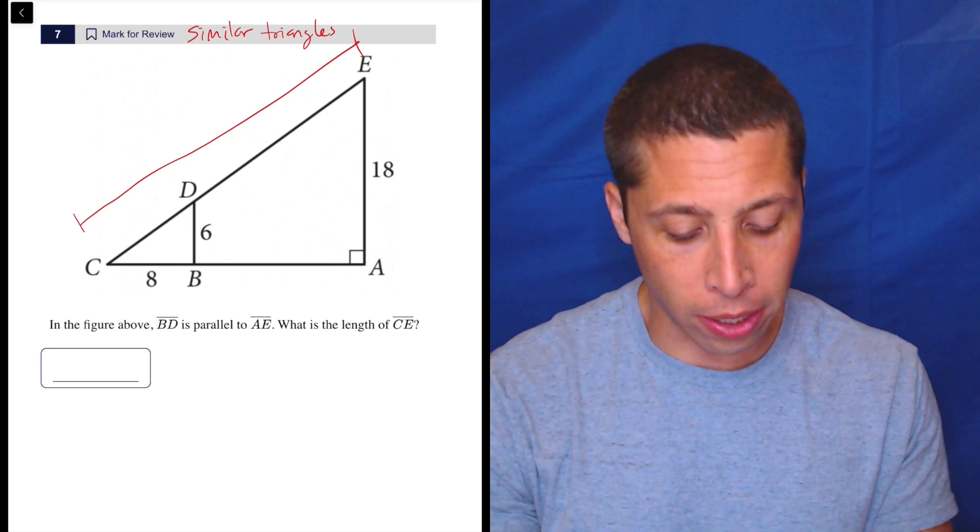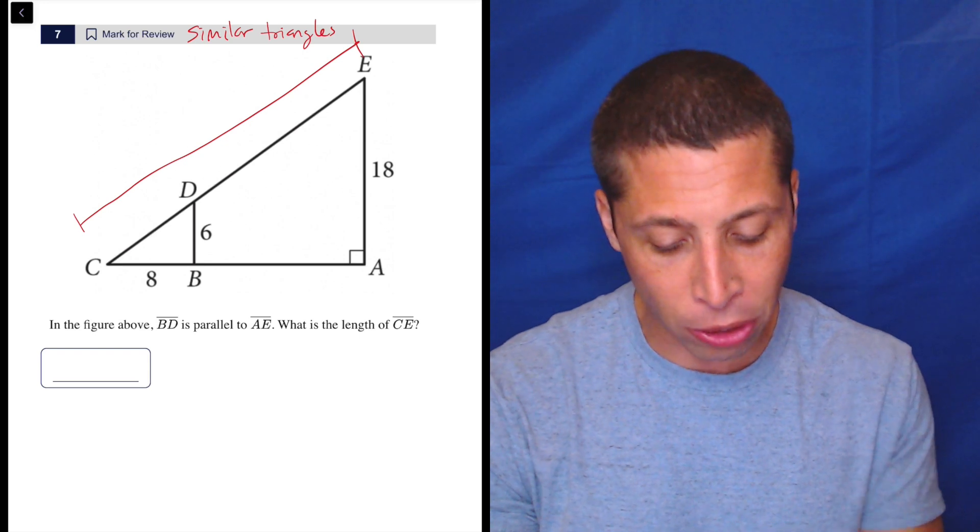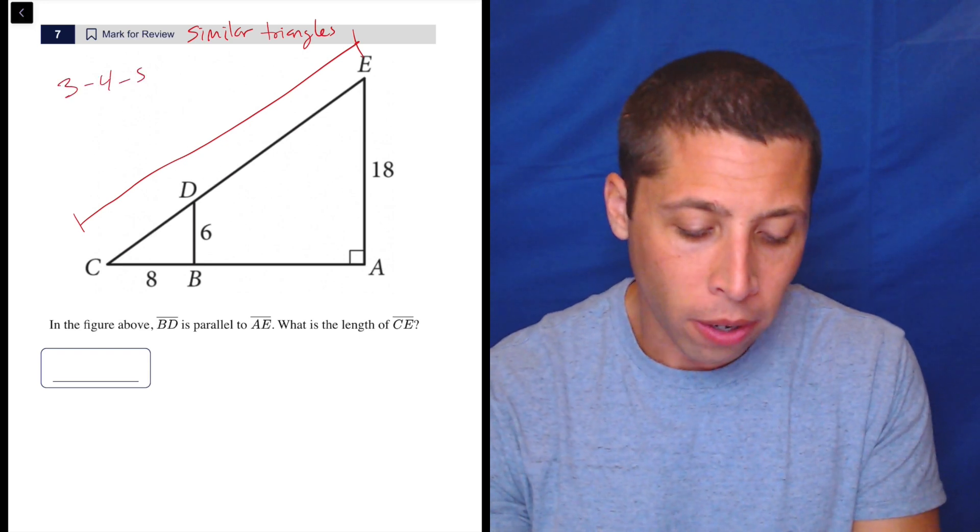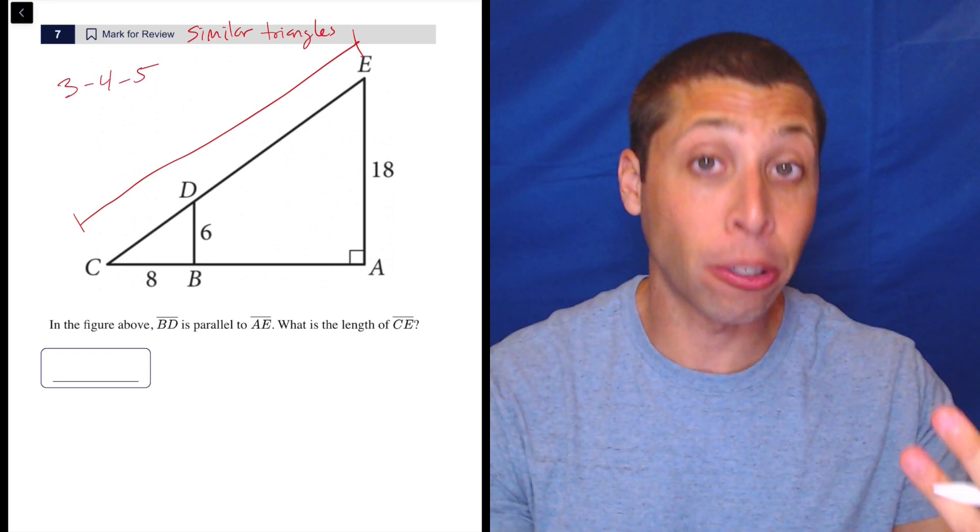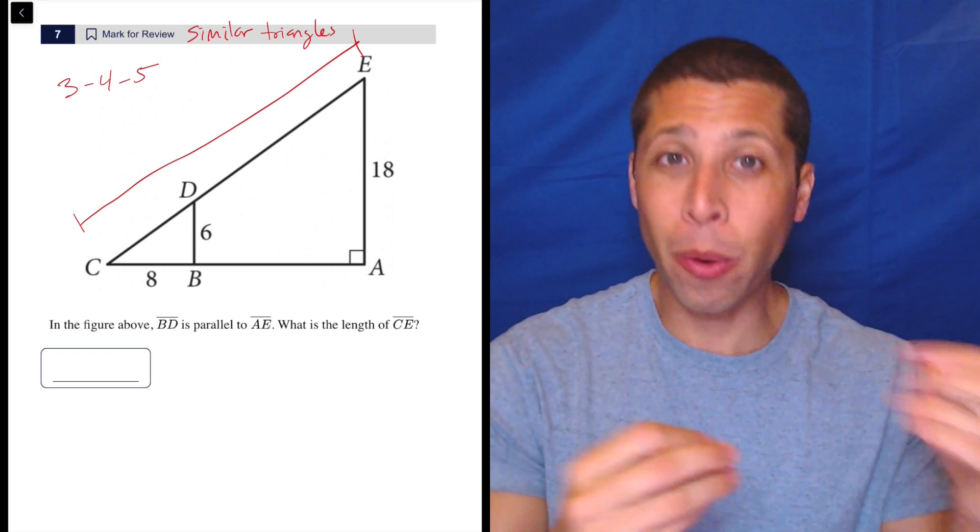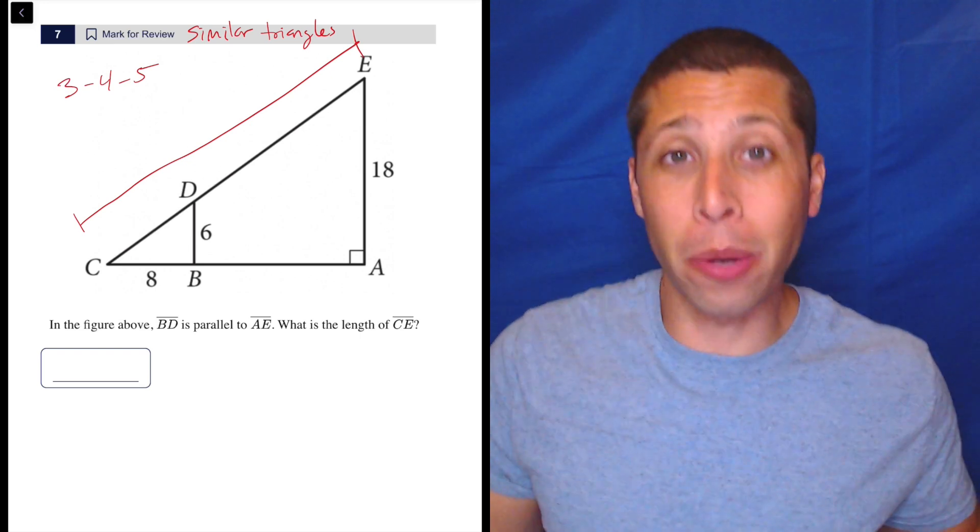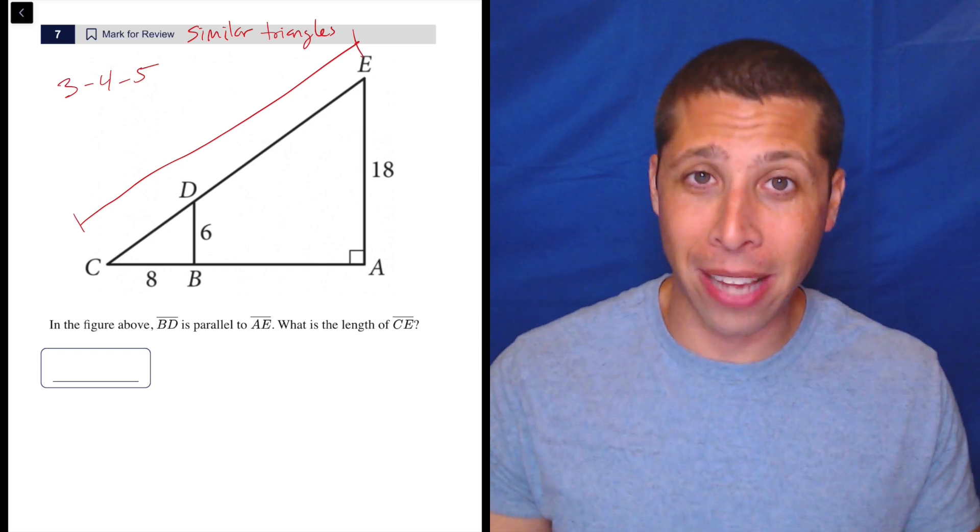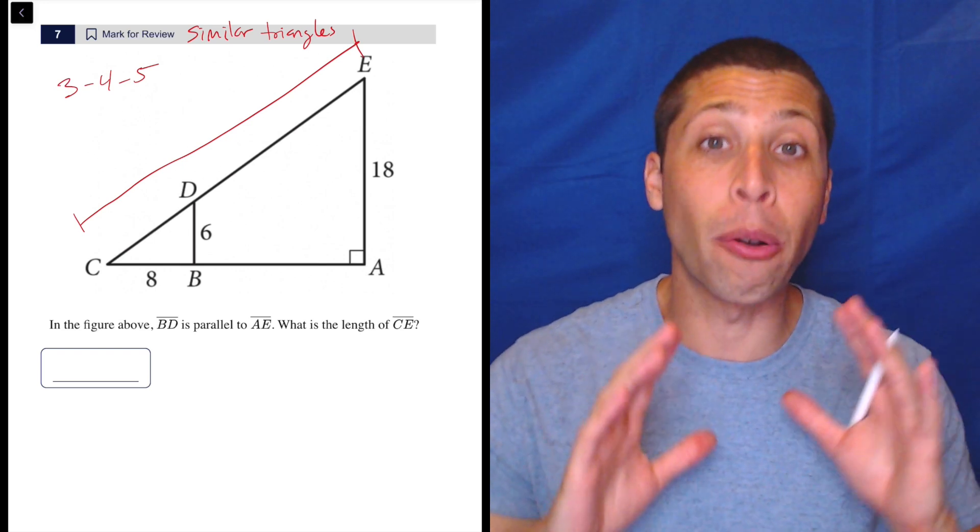Because when I look at the smaller triangle, I recognize that this is that special 3, 4, 5, what's called a Pythagorean triple, meaning these are all nice numbers that when we square them and do Pythagorean theorem, everything works out without any decimals or radicals or any mess. So 3, 4, 5 is the most common one.